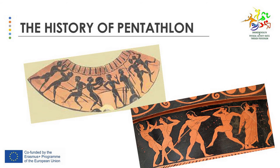The pentathlon was introduced for the first time at the 18th Olympiad in 708 BC. It consisted of running the length of a stadium, jumping, throwing a spear, throwing a discus, and wrestling. The pentathlon held a position of unique importance in the Games and was considered to be the climax, with the winner ranked as Victor Ludorum.